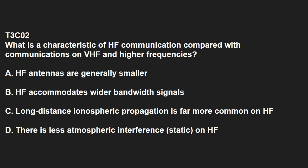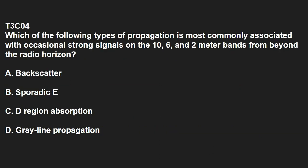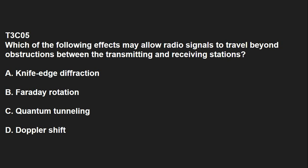T3C02: What is the characteristic of HF communications compared with communications on VHF and higher frequencies? Long-distance ionospheric propagation is far more common on HF. T3C03: What is the characteristic of VHF signals received via auroral backscatter? They are distorted and signal strength varies considerably. T3C04: Which type of propagation is most commonly associated with occasional strong signals on 10, 6, and 2 meter bands from beyond the radio horizon? The answer is sporadic E. T3C05: Which of the following effects may allow radio signals to travel beyond obstructions between the transmitting and receiving stations? That is knife-edge diffraction.